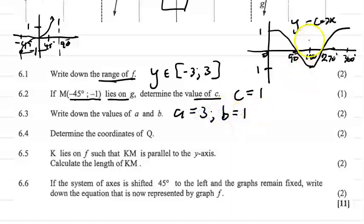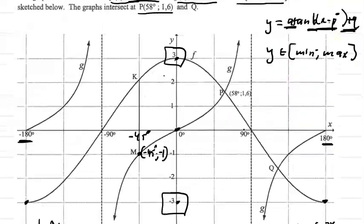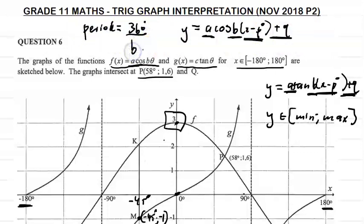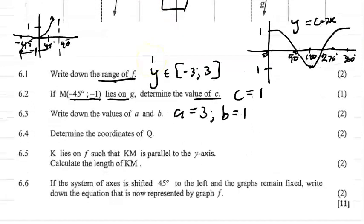Why does b equal 1? Because the period of this graph is 360 degrees, the same as the mother graph. Using the formula: period = 360°/b, we get b = 1. So the period of this cos graph is 360 degrees.